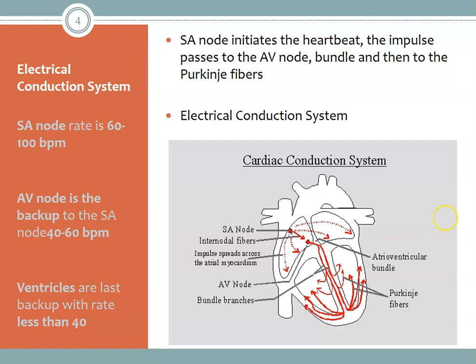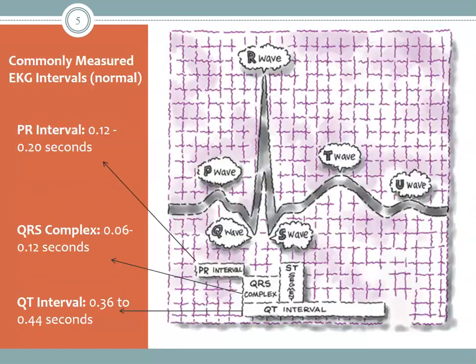If we're relying on the ventricles to keep blood flowing through the body, that's a poor system and it will be an emergency for the patient. Looking at the heart wave, we measure the normal intervals between each aspect of the wave because it tells us if something is going wrong — whether there's an electrolyte imbalance, a potentially dangerous arrhythmia, or if the patient is having a heart attack.